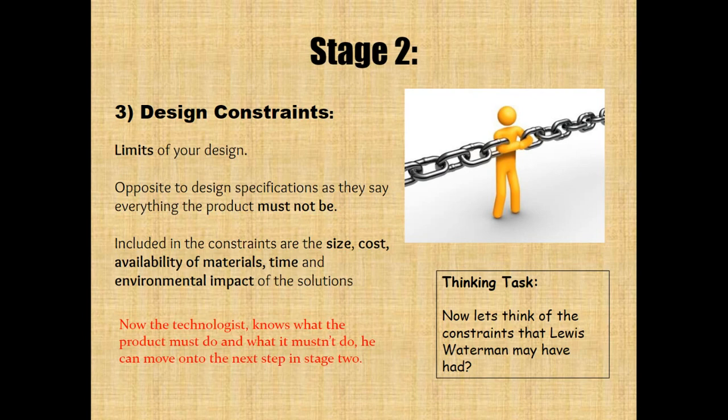Stage two, part three: design constraints are the limits of your design. Opposite to design specifications, they describe everything the product must not be. Included in the constraints are the size, cost, availability of materials, time, and environmental impact of solutions.